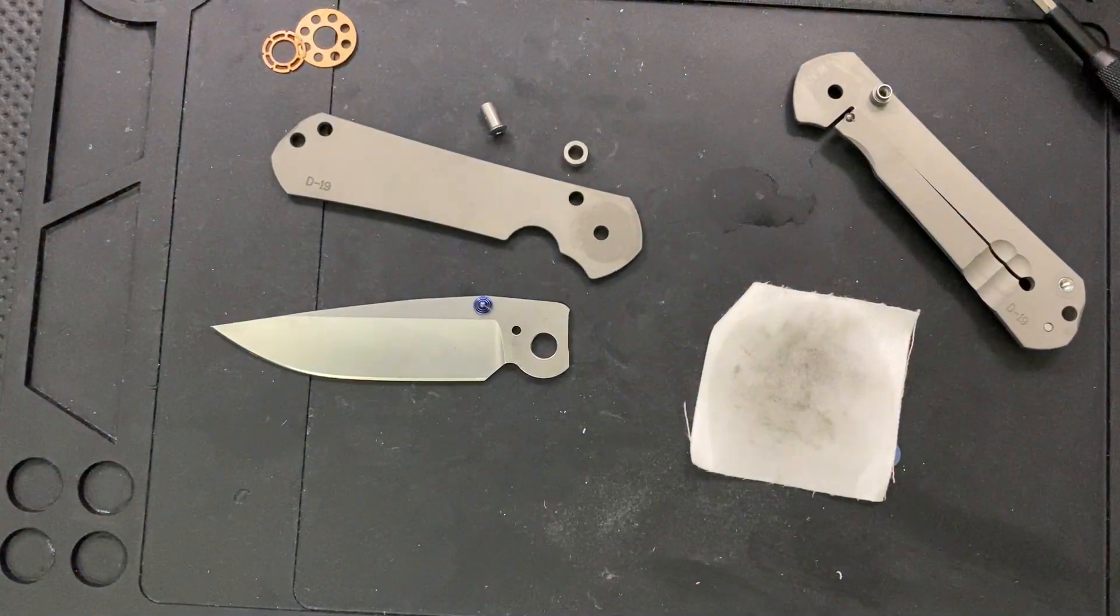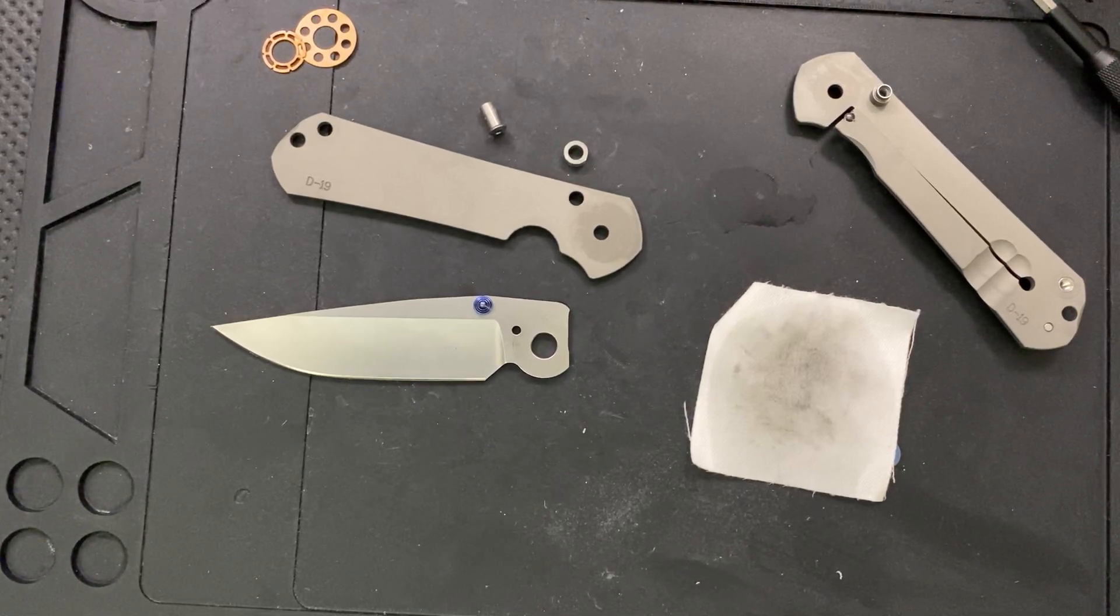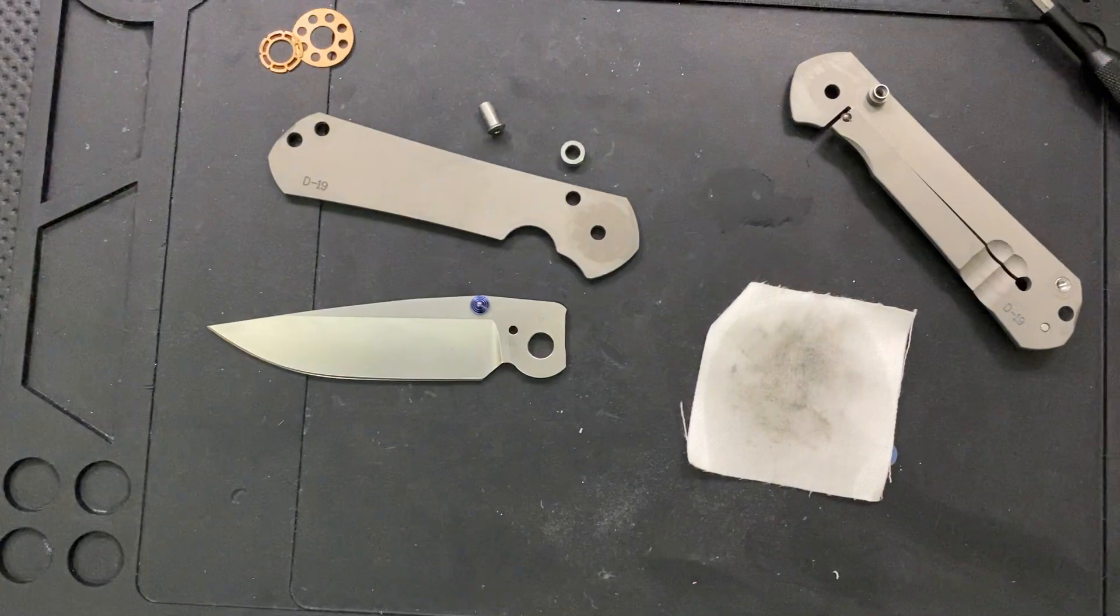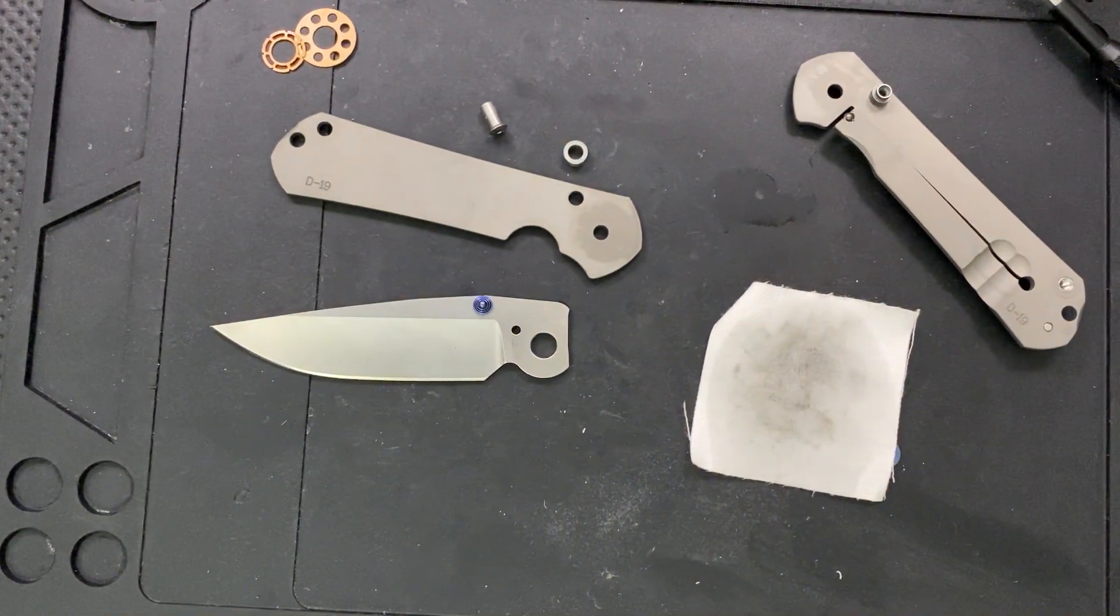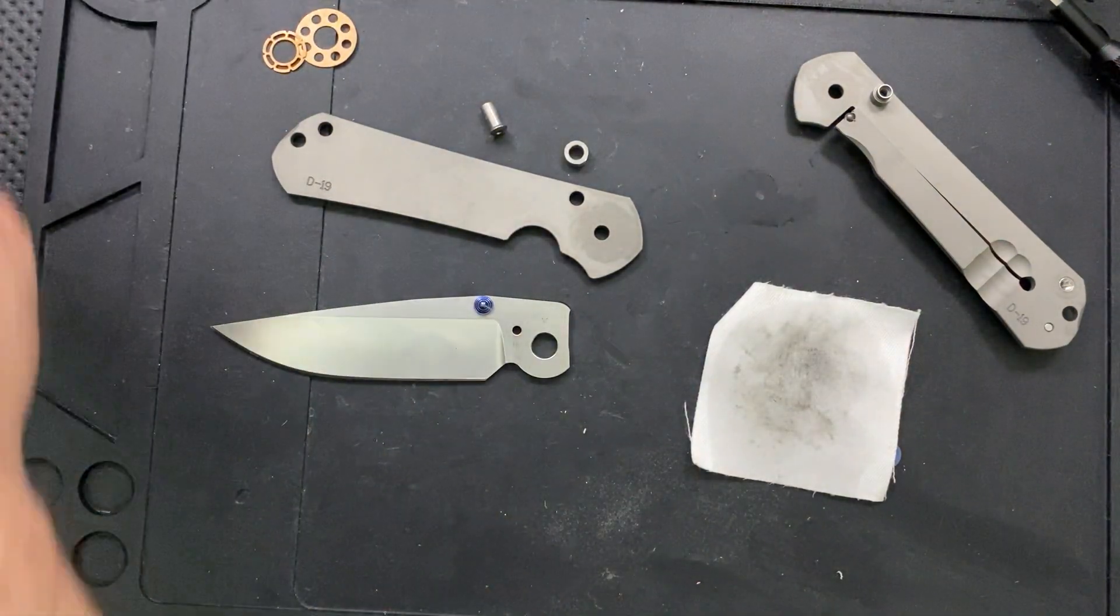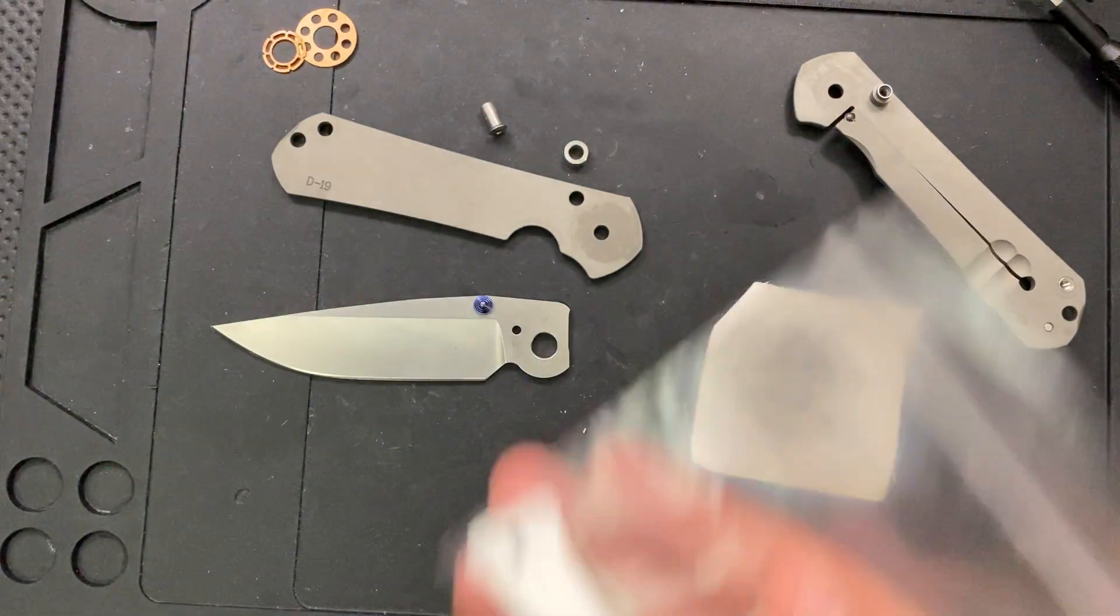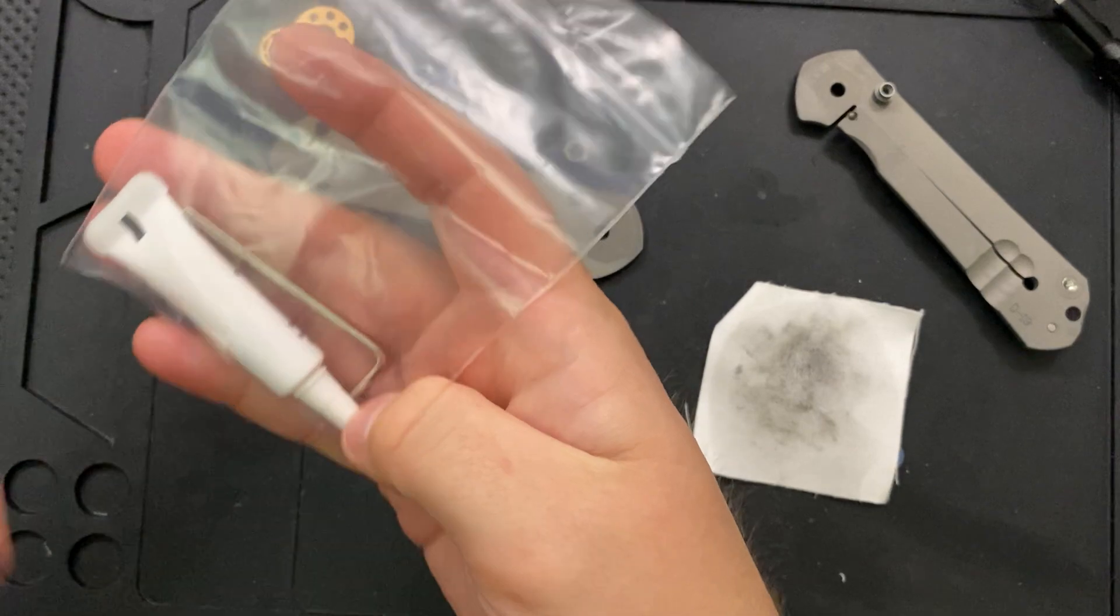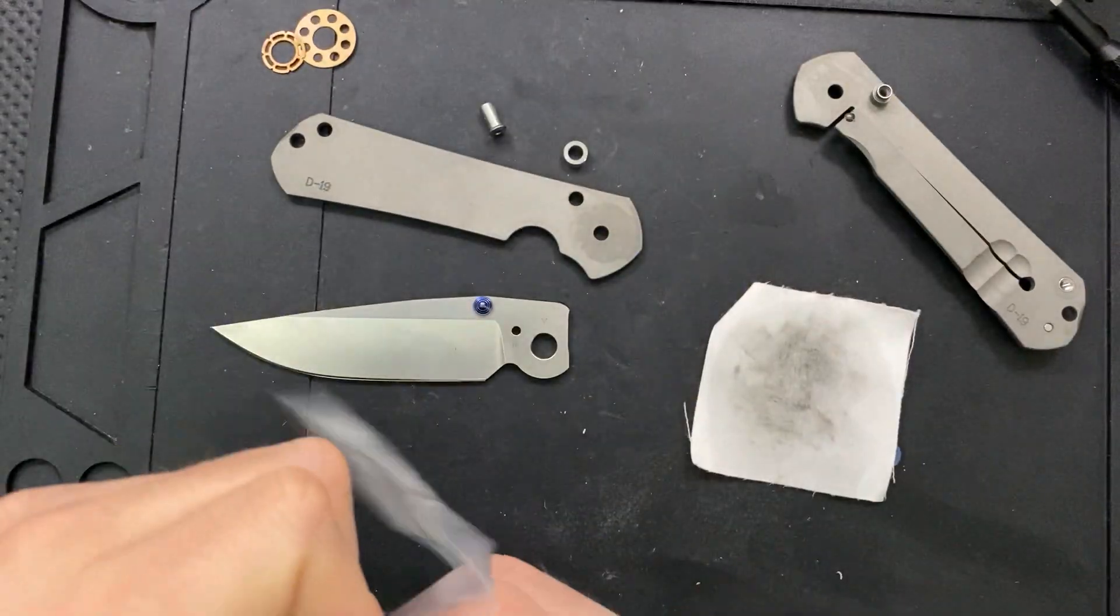But what I'm going to go ahead and do is start putting this guy back together. And as I do so, I am going to use the actual Chris Reeve grease. The reason I say that is because I need to go fetch it out of the box here that my buddy sent this knife in. And while I'm at it, I'll throw the lanyard in there so that way it doesn't disappear.